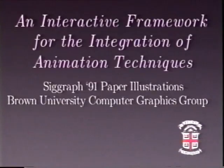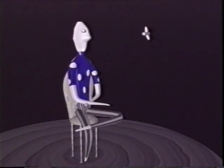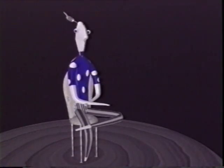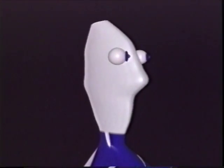These are interactive illustrations, created with the system presented in our SIGGRAPH 91 paper. In this example, a figure watches a fly. This animation was created interactively, then an object encapsulating Pixar's RenderMan asked all the objects in the scene to render themselves, producing this anti-aliased and texture-mapped rendering.